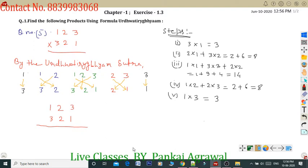Then we will multiply by the steps. In first step, you will multiply 3 into 1. First digit, 3 and 1, you will multiply 3 ones. What will be? 3.